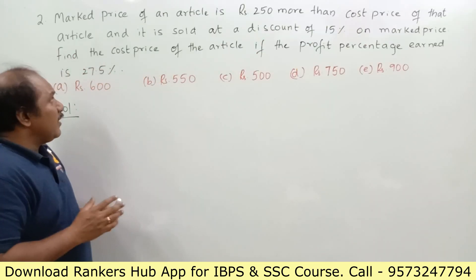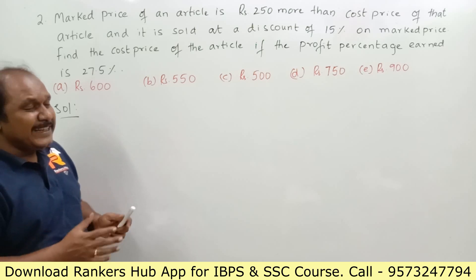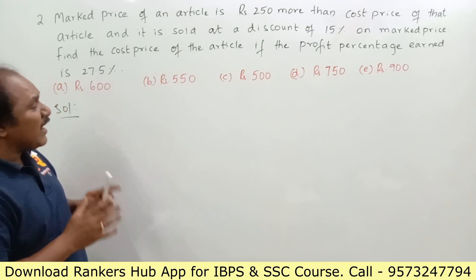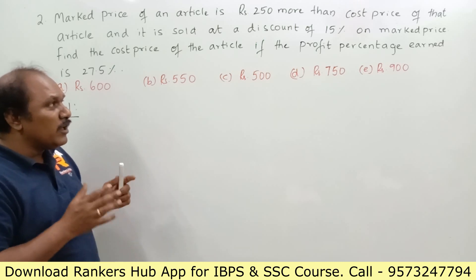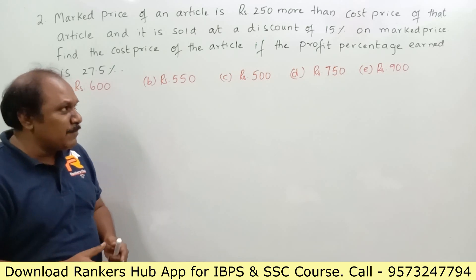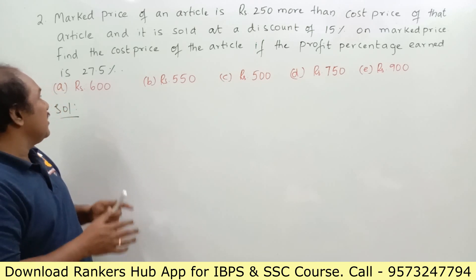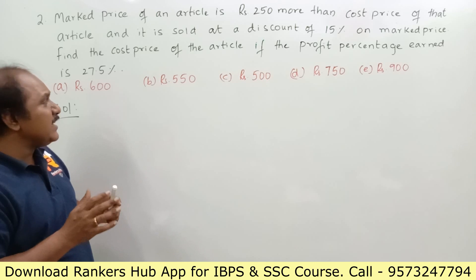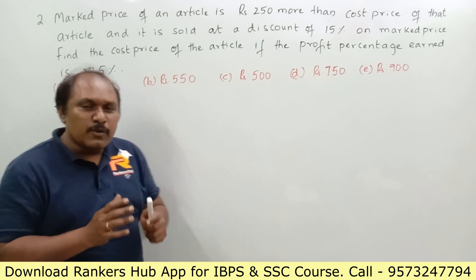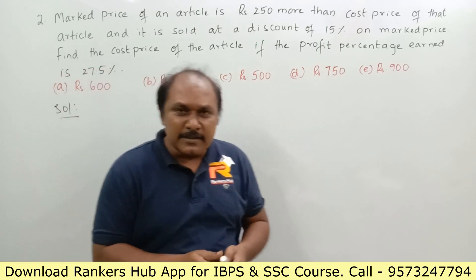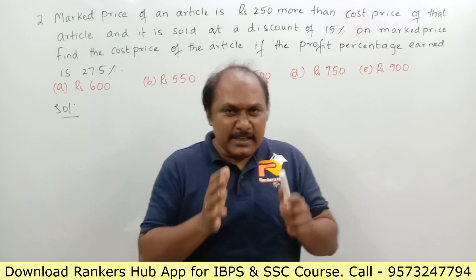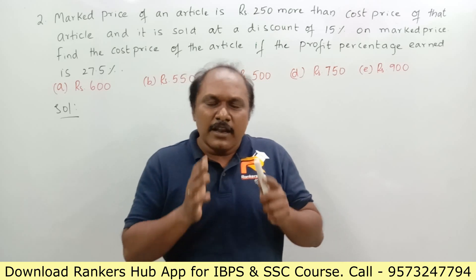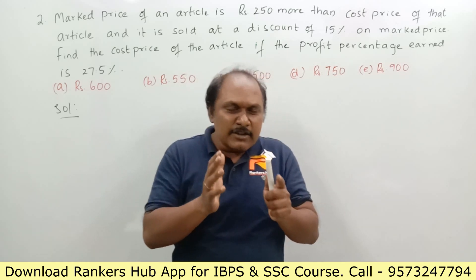Now let us see the second question. The market price of an article is rupees 250 more than the cost price of that article, and it is sold at a discount of 15 percent on market price. Find the cost price of the article if the profit percentage earned is 27.5 percent. This question is based on the chapter profit and loss.